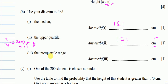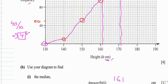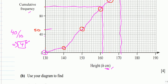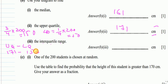Part (b)(iii) is the interquartile range: upper quartile minus lower quartile. We have the upper quartile of 171. The lower quartile is one-quarter of 200, which is 50. At cumulative frequency 50 the height reads as 150 cm. So the IQR is 171 − 150 = 21 cm. Even if you read the upper quartile slightly differently, subtract your value from 150 to earn the mark.